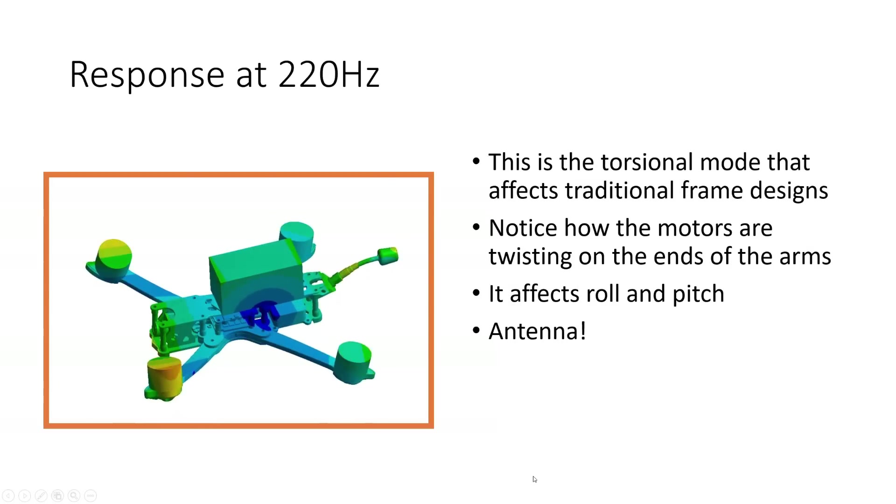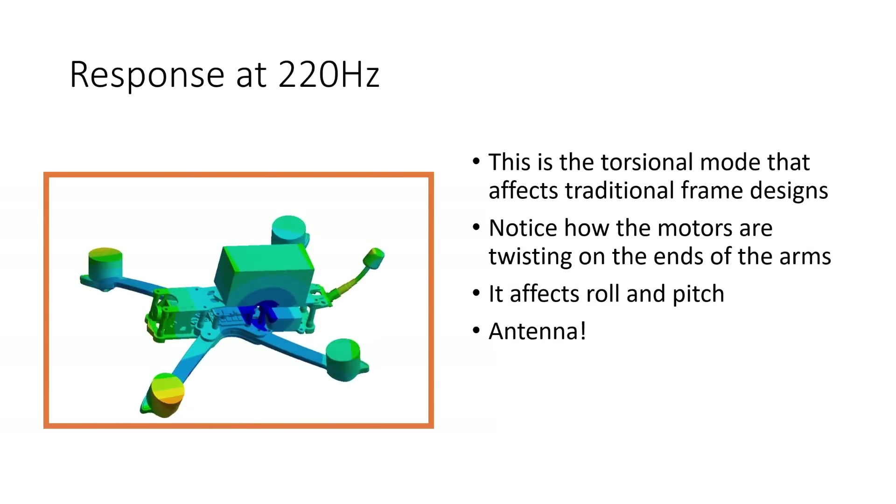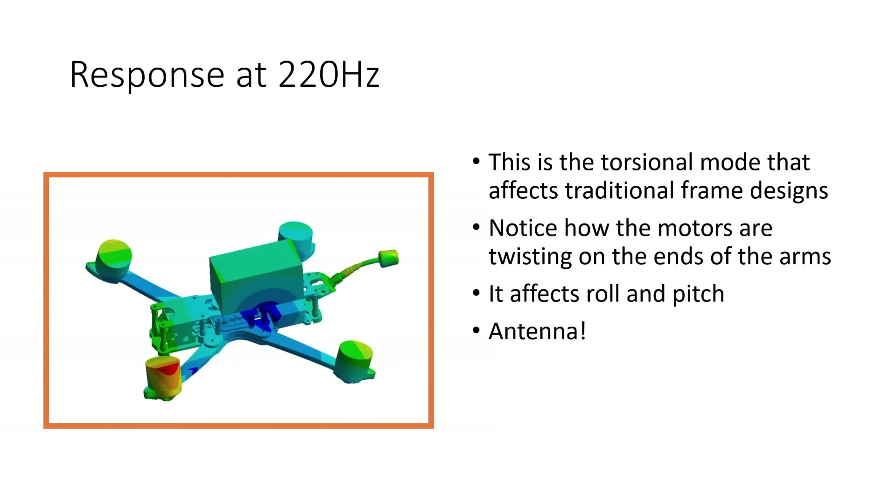So let's look at the response at 220 hertz. So this is the fifth resonant mode of the frame. And this is the torsional mode that affects a traditional frame design such as this one. Notice how the motors are twisting on the ends of the arms and the way it's affecting both the roll and the pitch axis simultaneously just as we would expect from looking at the black box logs. Also again the antenna is still participating so it's not helping matters here.